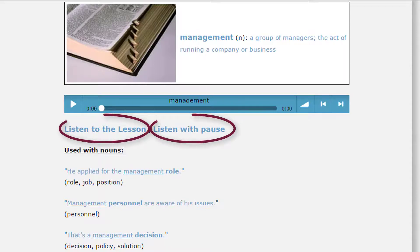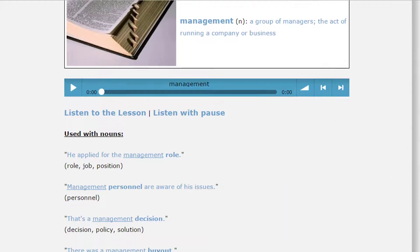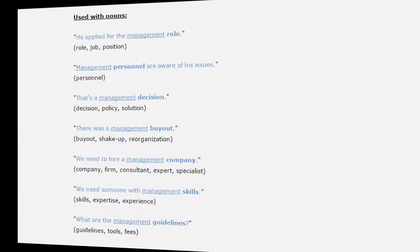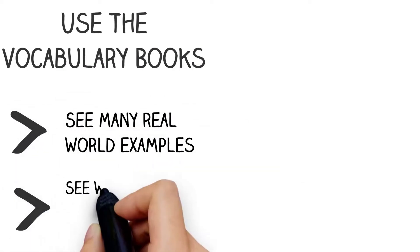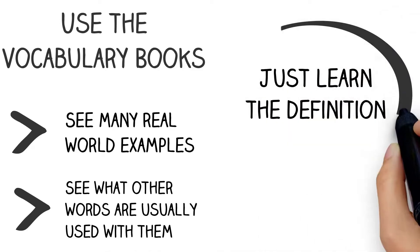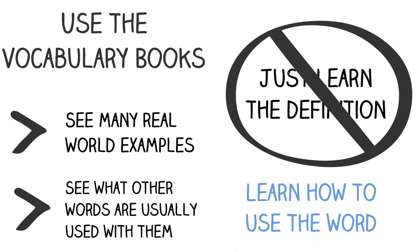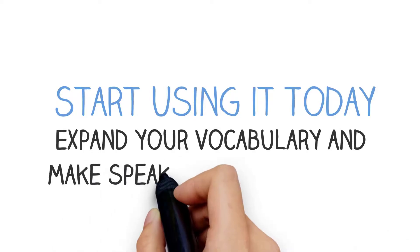Use these links to listen to the lesson at different speeds. Repeat out loud what you hear during the pause to practice your speaking. Study the example sentences and see different ways the word is commonly used. There are many examples that show how the words are used and what other words are often used with them. Instead of learning the definition of a word, this section will teach you how to use the word in full sentences. Start learning how to use vocabulary to speak English fluently.